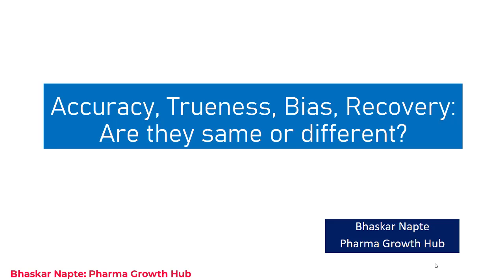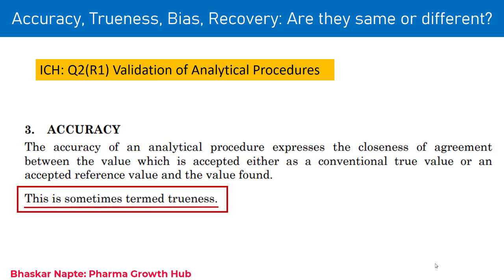So let us begin the discussion. I am going to talk about these four terms in the context of four different guidelines. The first one is the ICH. The current ICH guideline Q2R1, which covers validation of analytical procedures, has given a definition of accuracy.